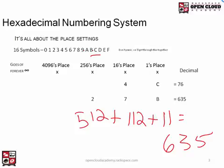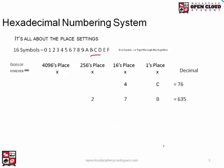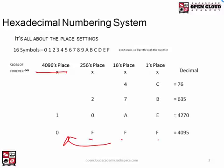So that's converting hex numbers to decimal. Go ahead and pause the video to try the practice problems. One interesting pattern: FFF must be one less than the next place setting, which is 4096, so FFF equals 4095. Whenever you see a lot of consecutive Fs, just know it's always going to be one less than the next place setting.